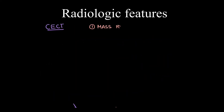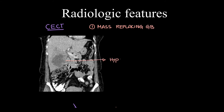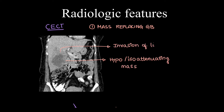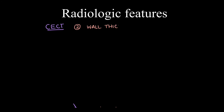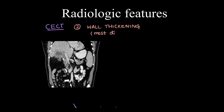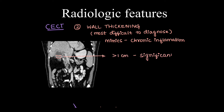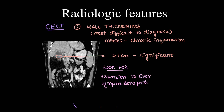On contrast enhanced CT, the first type — mass replacing gallbladder — we already saw a case. This is a similar case where there is a hypo- or isoattenuating mass replacing the gallbladder with ill-defined interface indicating liver invasion and central necrotic areas. Also look for lymph nodes, IHBRD, and liver metastases. The second type can present as wall thickening — wall thickening more than 1 cm is considered significant. Look for extension to liver, lymphadenopathy, and hematogenous spread to other organs.